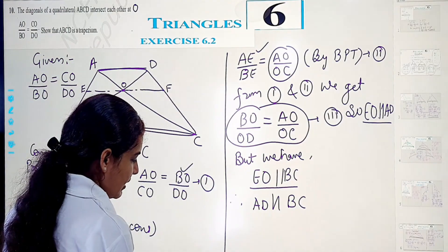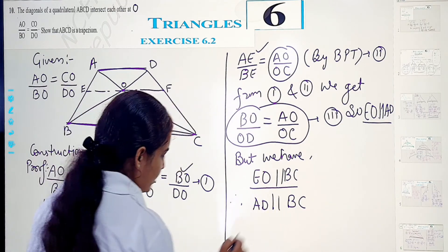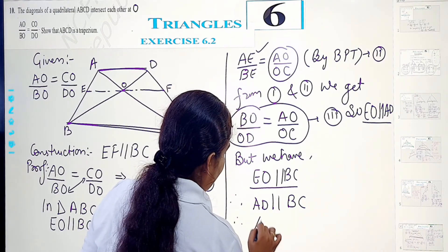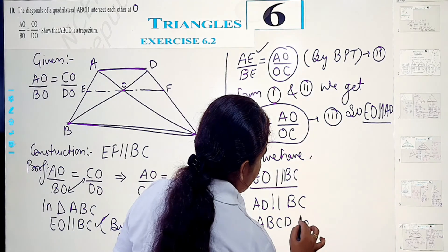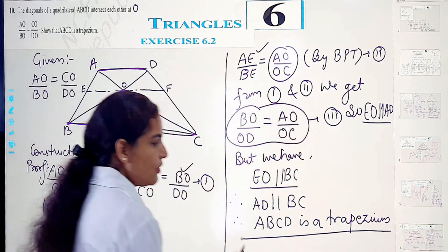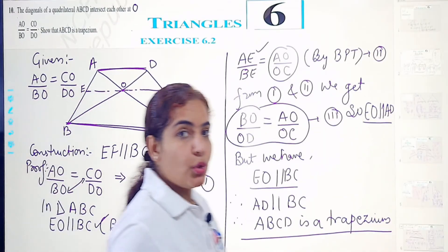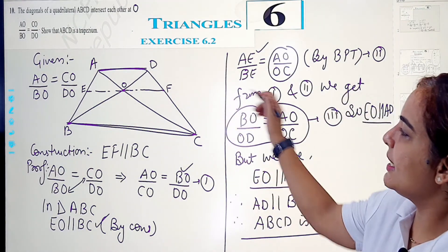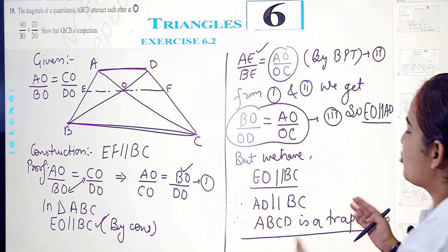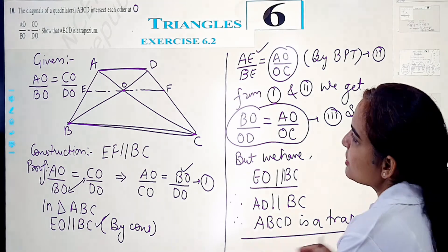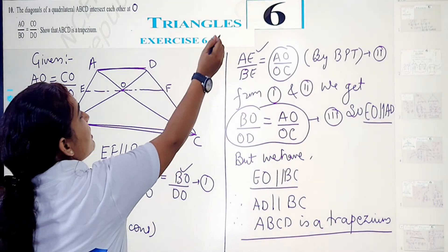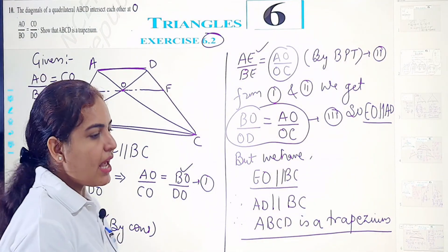Therefore, AD is parallel to BC. Hence ABCD is a trapezium. In any quadrilateral, if only one pair of sides is proved parallel, that quadrilateral is called a trapezium. We proved AD ∥ BC but did not prove AB ∥ CD, so it is not a parallelogram — it is just a trapezium. This was the solution for question number 10 of exercise 6.2.